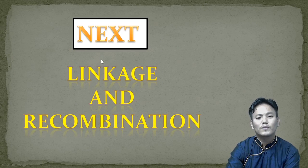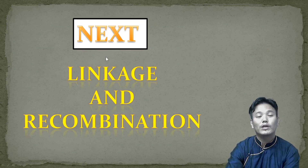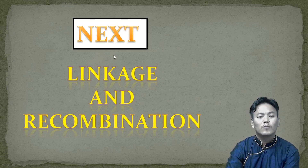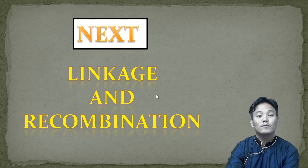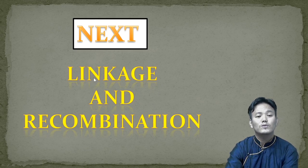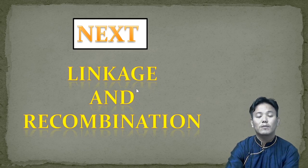That's all about the chromosomal theory of inheritance. In the next video, we will continue talking about the experiments conducted by Thomas Hunt Morgan with his model organism, Drosophila melanogaster. We will discuss about linkage and recombination, both of these phenomena observed by Thomas Hunt Morgan and his colleagues.